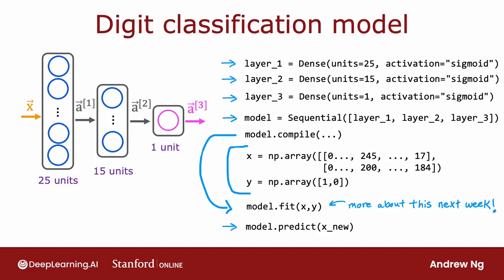And similar to what you saw before with the coffee classification network, by convention, instead of assigning layer 1, layer 2, layer 3 explicitly like this, we would more commonly just take these layers and put them directly into the sequential function. So you end up with this more compact code, where you just tell TensorFlow, create a model for me that sequentially strings together these three layers, and then the rest of the code works same as before. So that's how you would build a neural network in TensorFlow.